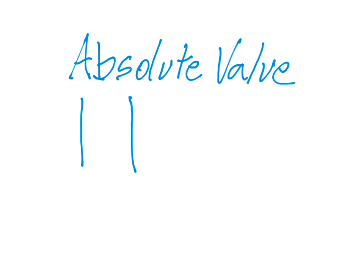Notice that the absolute value bars go both above and below the number — for example, the absolute value of 3 — so that you can tell them apart from the number 1. And how far from zero is 3? It is 3 units away from zero.